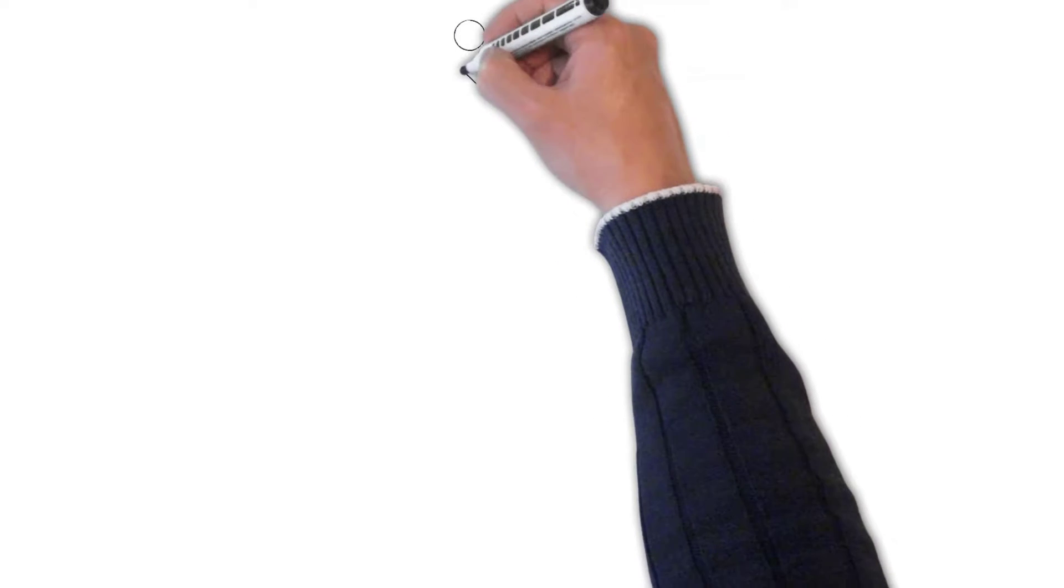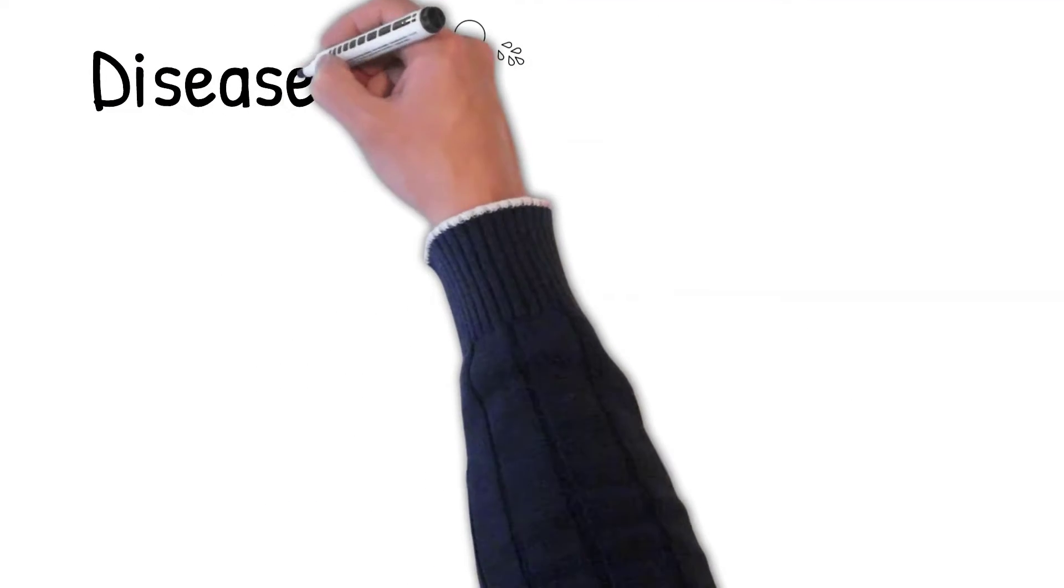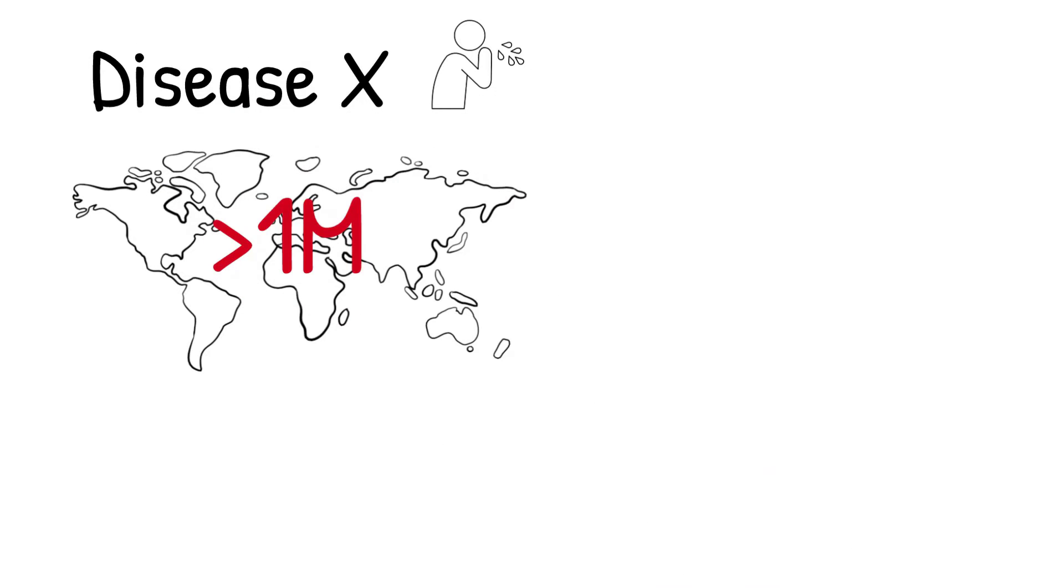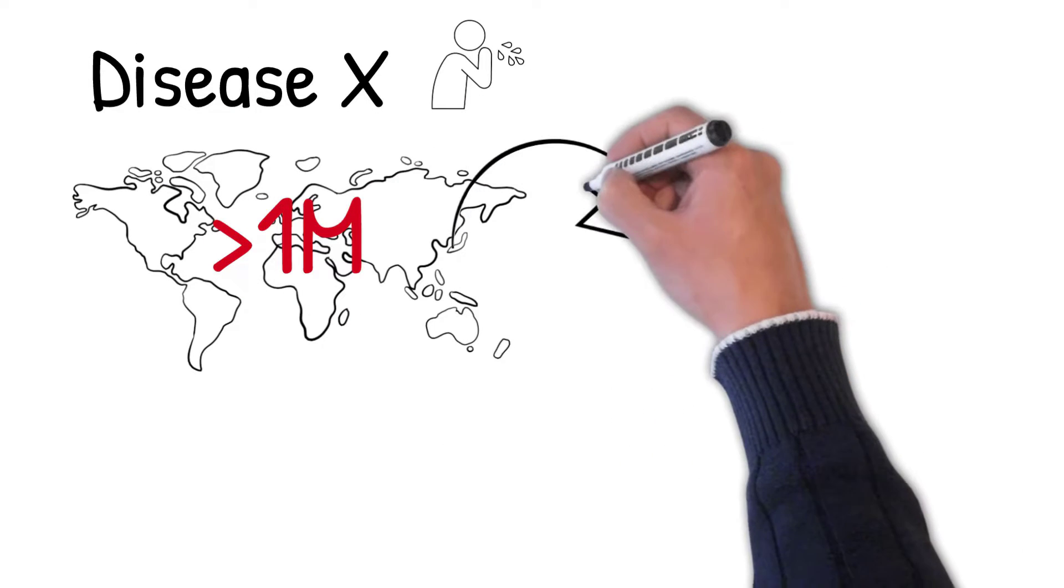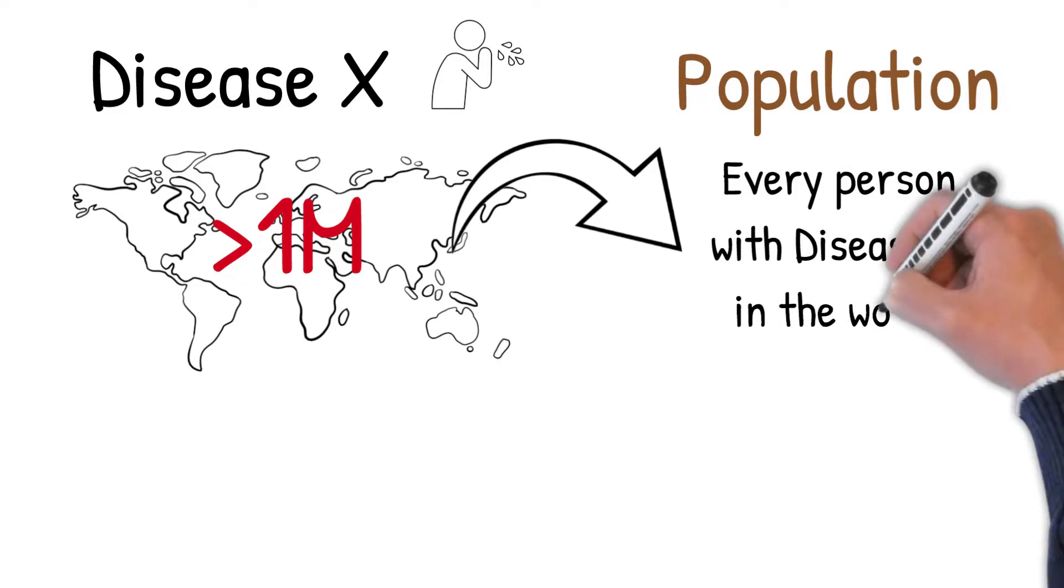So, the easiest way to understand the concept behind what a sample and a population is, is to simply use an example. Let's say we are performing an experiment where we are interested in people who have a disease, and this disease is called Disease X. It is estimated that over 1 million people in the world have Disease X. The population in this case is every person in the world who has Disease X.